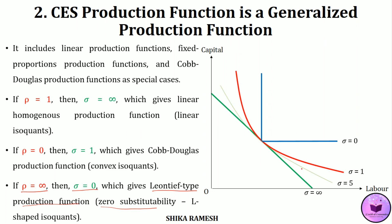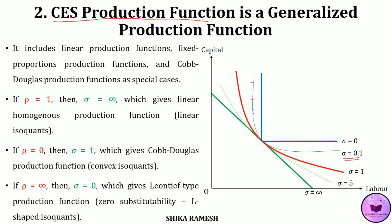If the elasticity equals 5, we get an isoquant that has slowly started to show convex properties from a linear shape. If the elasticity of substitution equals 0.1, we get an isoquant that is becoming more L-shaped from a convex isoquant. As the value of elasticity of substitution changes, we get isoquants of different shapes, but all points along any given isoquant have a constant elasticity. All these isoquants represent a constant elasticity of substitution production function. That is why a CES production function is termed a generalized production function.